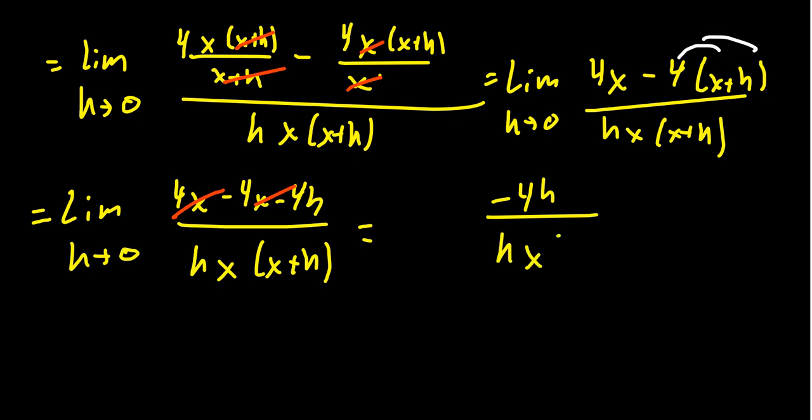You still have h times x times x plus h as we take the limit as h is going to 0. So because of all the work we've done in the numerator, you're now going to notice that the numerator is just negative 4 times h. The factor of h in the numerator cancels with the factor of h in the denominator.